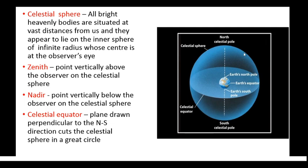So this sphere — where the center will be the observer from the earth and the star will be on the surface of the sphere — this great sphere is known as celestial sphere. All bright heavenly bodies are situated at vast distances from us and they appear to lie on the inner sphere of infinite radius whose center is at the observer's eye.